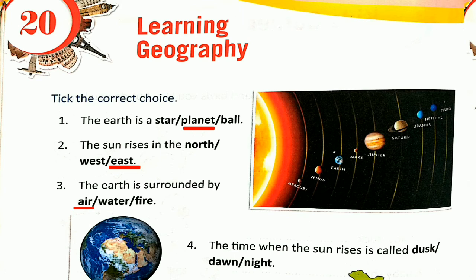Number 4: The time when the Sun rises is called dusk, dawn or night? It is called dawn. So: Earth is a planet, the Sun rises in the east, the Earth is surrounded by air, and the time when the Sun rises is called dawn.